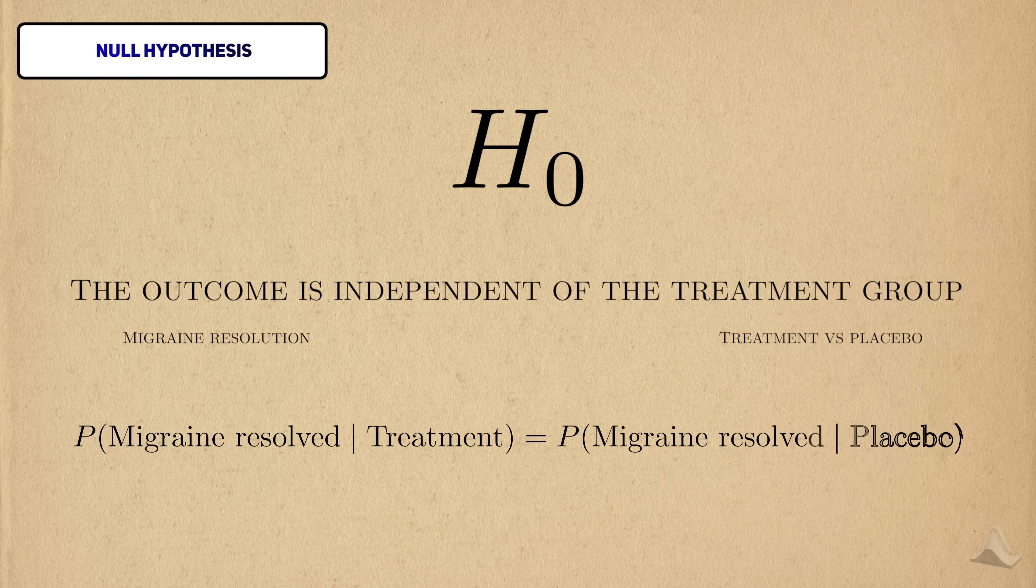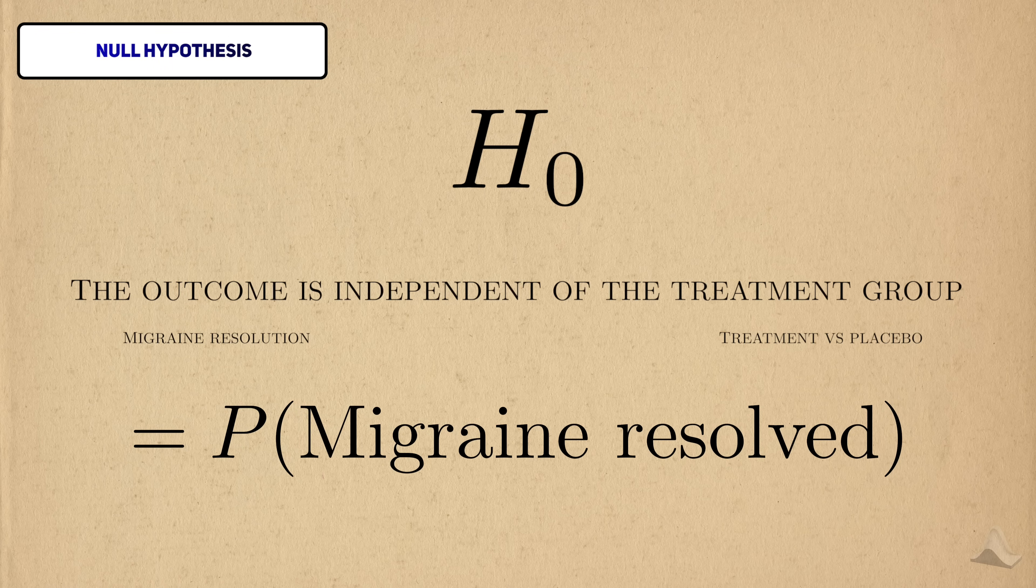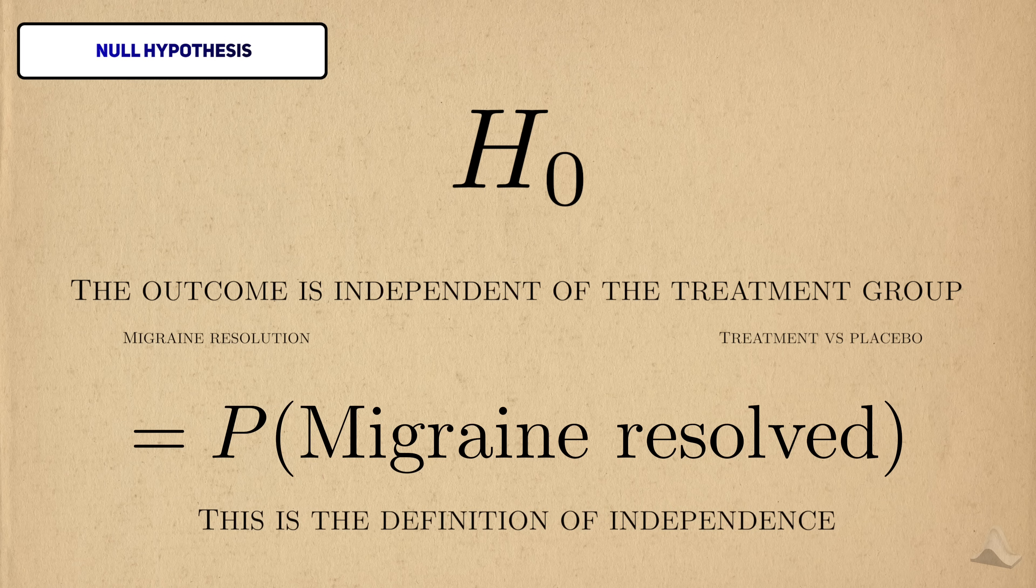If the distribution of the outcome doesn't change, no matter what treatment group it's conditioned on, then these two variables are considered to be independent of each other. This is the literal definition of independence from a probability perspective. A contingency table just displays data.